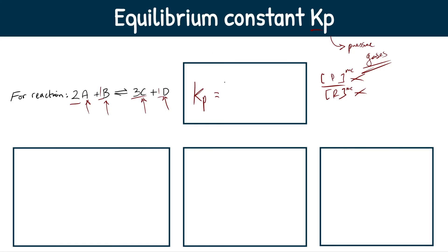In Kp, we do p, rounded brackets. Now you can do a single lowercase p, you can do a double lowercase p, both of those are fine. I'm going to go with just one because it saves me time of writing a second letter. And then you do exactly the same thing, products over reactants. So we got 3C.